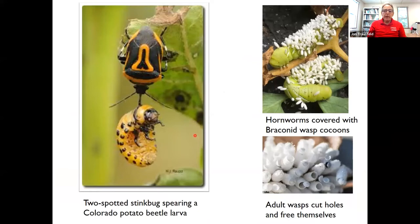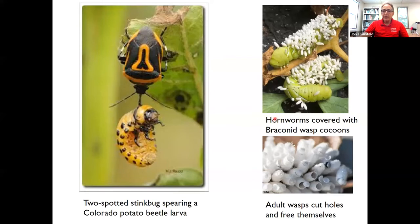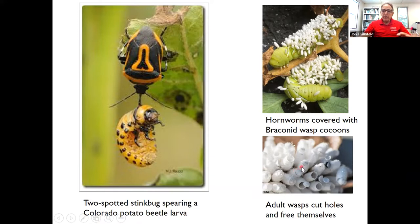Just a couple of examples: a predator on the left — the two-spotted stink bug — and on the right, the very tiny braconid parasitoid wasps that will parasitize hornworms. A lot of folks see these white little cocoons on the outside of hornworms and assume they are eggs. You can see at the bottom a close-up of those cocoons with the tops chewed off evenly and neatly by the adults who are now emerging. Lots of little wasp immatures have been feeding inside the hornworm — a great example of biological control.